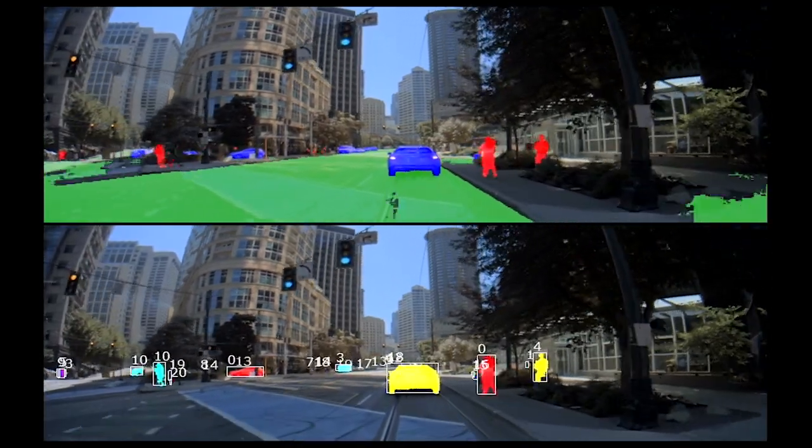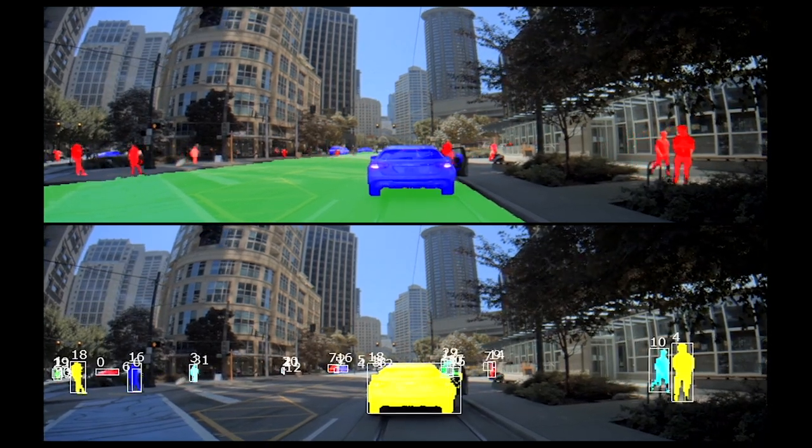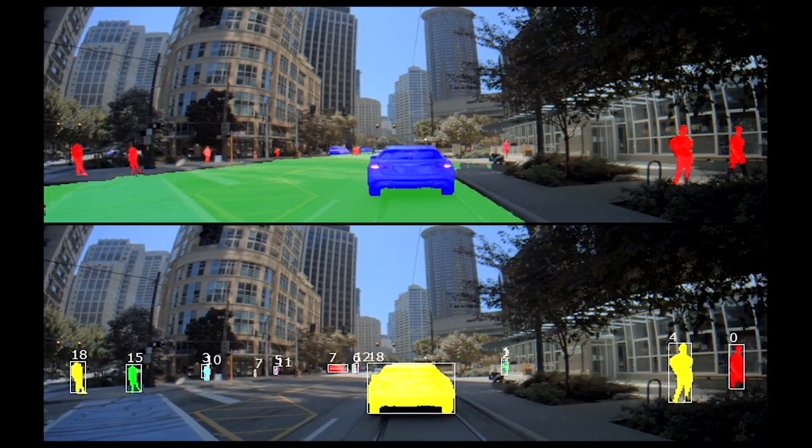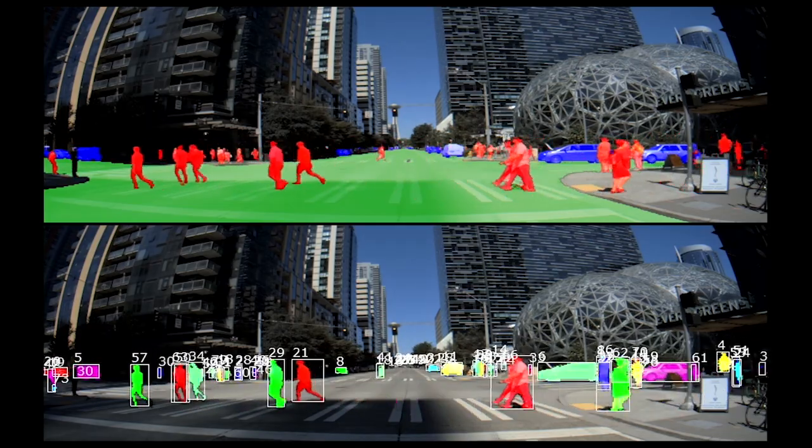And in the bottom video, we see segmentation of these object classes into individual instances, as shown by their unique object IDs. So each of the pedestrians at this intersection is detected and tracked as a different instance.